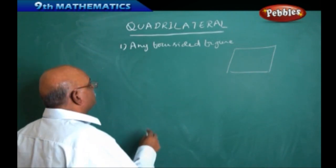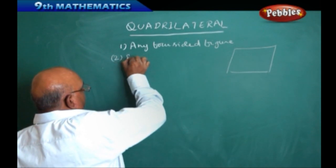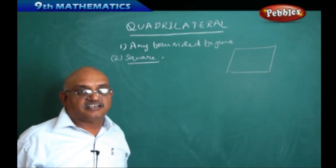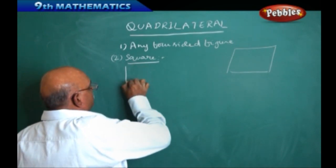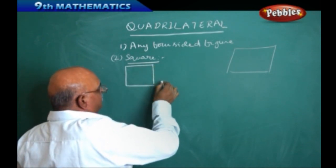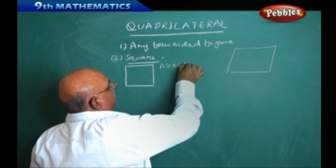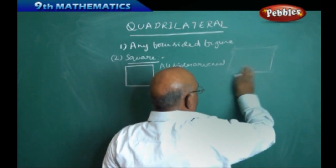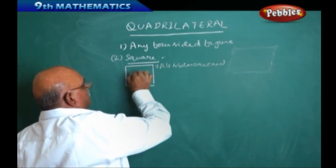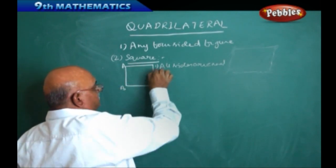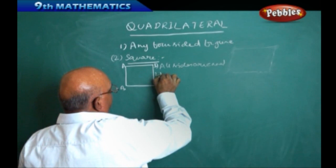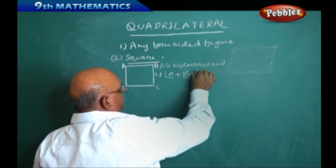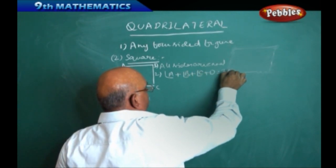We are most popular with the square, so we will start with the square and then come back to the remaining quadrilaterals. In a square, all four sides are equal. Labeling it as ABCD, the sum of the angles in a square is 360 degrees: angle A plus angle B plus angle C plus angle D equals 360 degrees.